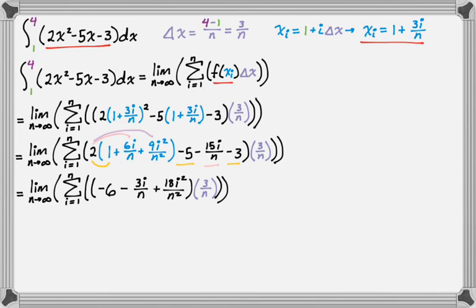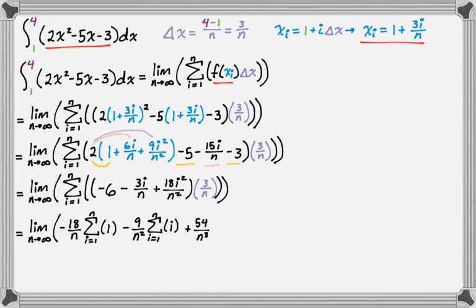Now I'm going to distribute the delta x and factor out of the summations. Anything that doesn't involve i, I'm going to factor out. So for the first one, I distribute 3/n to get -18/n. That's -18/n times the sum of 1. Then distributing 3/n to -3i/n gives -9/n² times the sum of i. Then 3/n times 18i²/n² gives 54/n³ times the sum of i². Close the limit.